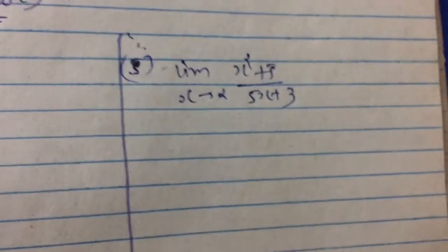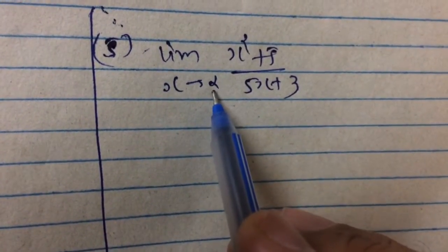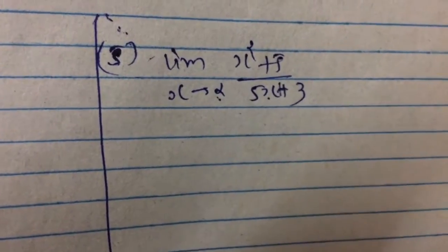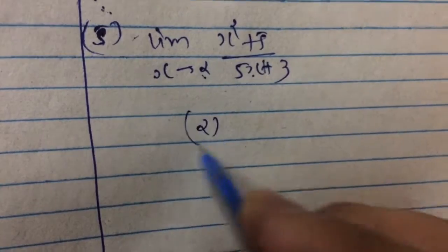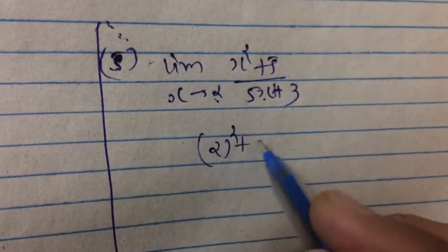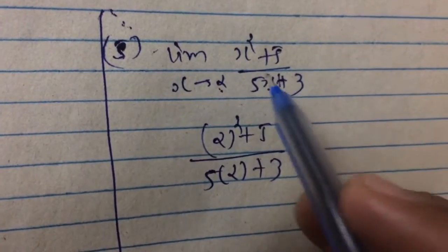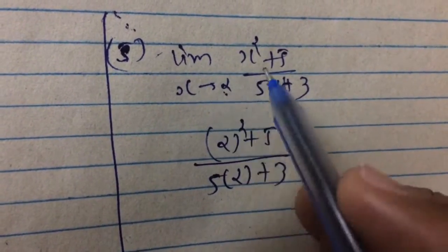So for that, we just put x equal to 2 here because there is no zero at the denominator. So first of all, we can write the result in this way: 5 times 2 plus 3. Suppose if the denominator becomes 0, then we cannot use this method.